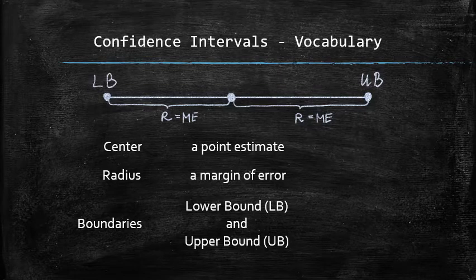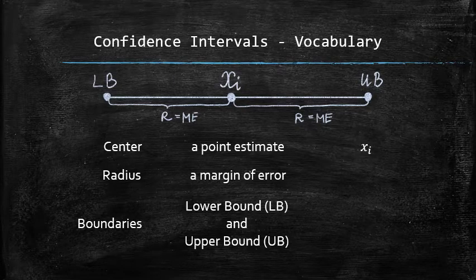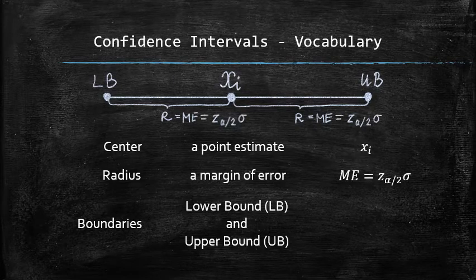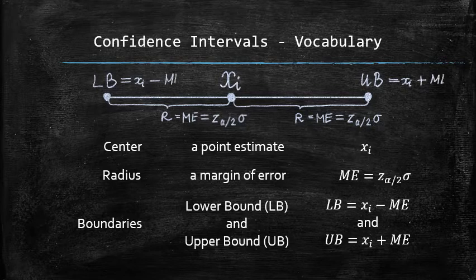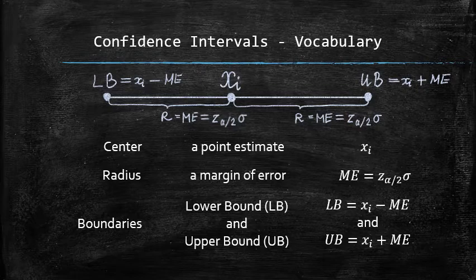In our example, the point estimate is a single random observation xi. The margin of error can be found using the provided formula. And the boundaries can be found by adding and subtracting the margin of error from and to the point estimate.